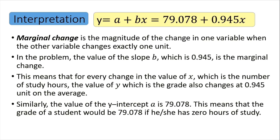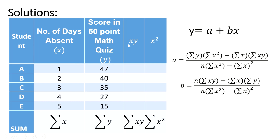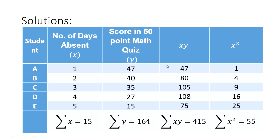One advantage of the regression line is that we can predict the value of the dependent variable since y depends on x. Now for our second example: given the data below, find the equation of the regression line and provide an interpretation. This time we have five students with their number of days absent and their respective test scores. We again add columns for xy and x squared. For xy: 1×47=47, 2×40=80, 3×35=105, 4×27=108, 5×15=75.